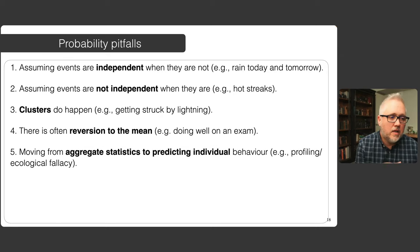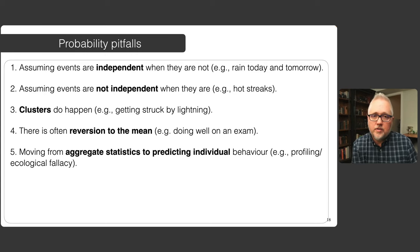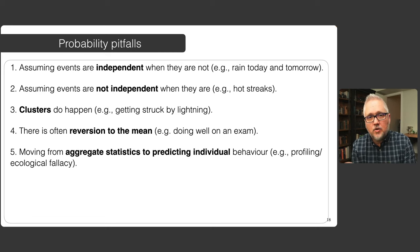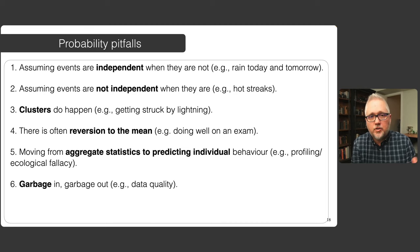The next potential pitfall is moving from aggregate statistics to try to predict what one individual is likely to do. There is a whole literature on the ecological fallacy if you're interested. You can think of examples of police profiling or others that look at aggregate statistics of the likelihood of something happening amongst a particular group, and then seeing one particular individual of that group and assuming that the group probabilities apply at the individual level.